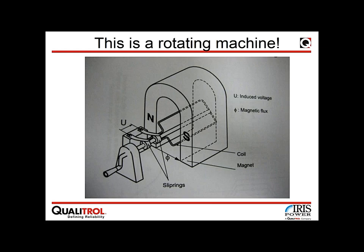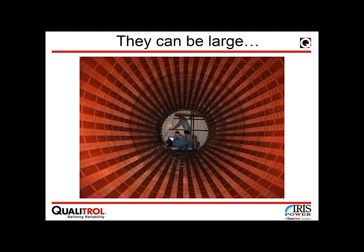These same conditions that enable electrical machines to operate are also responsible for some of the problems that can happen, since it is not always desirable to have voltage or current created in locations not designed for that purpose.